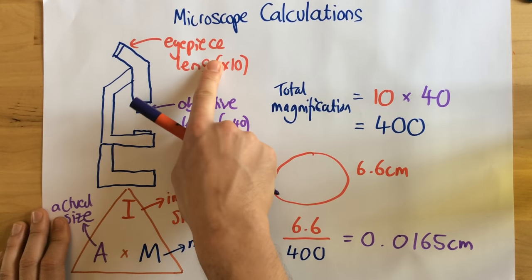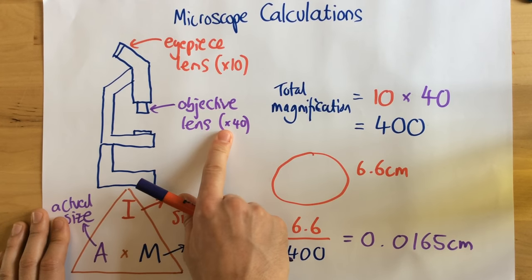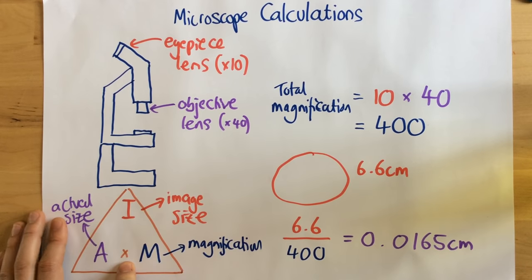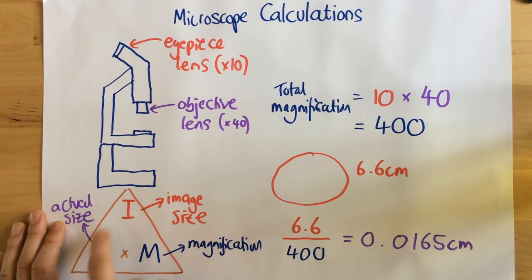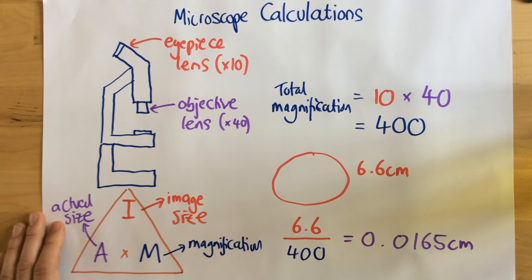So just to summarize, to find the total magnification, you simply multiply the magnification of the eyepiece lens by the magnification of the objective lens. And in order to find the image size, actual size, or magnification, you use this equation triangle of I AM. Thank you very much.